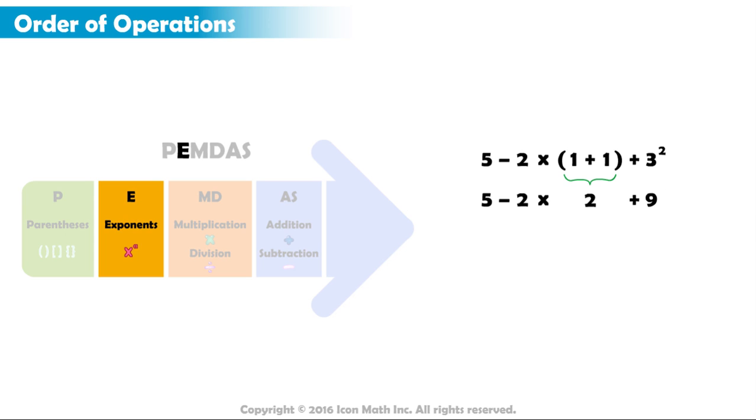Next, we must perform any multiplication or division from left to right. So, 2 times 2 equals 4. The expression becomes 5 minus 4 plus 9.